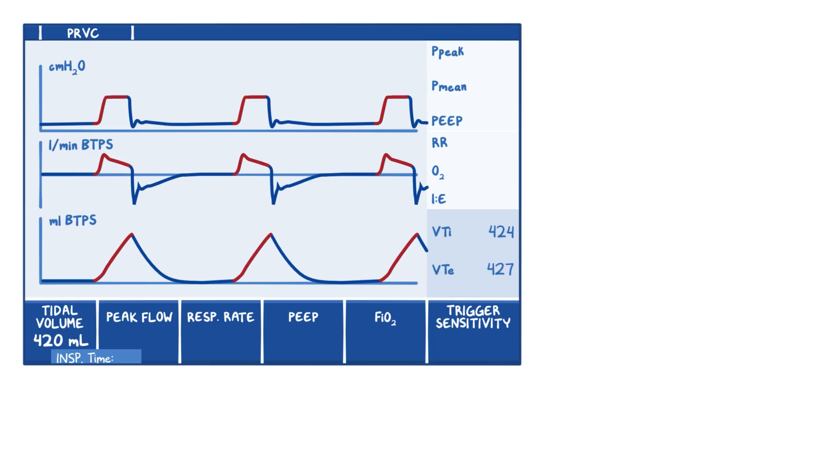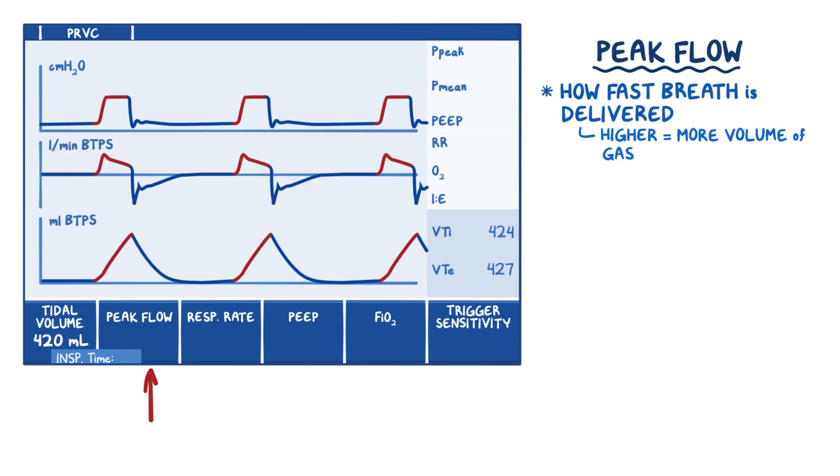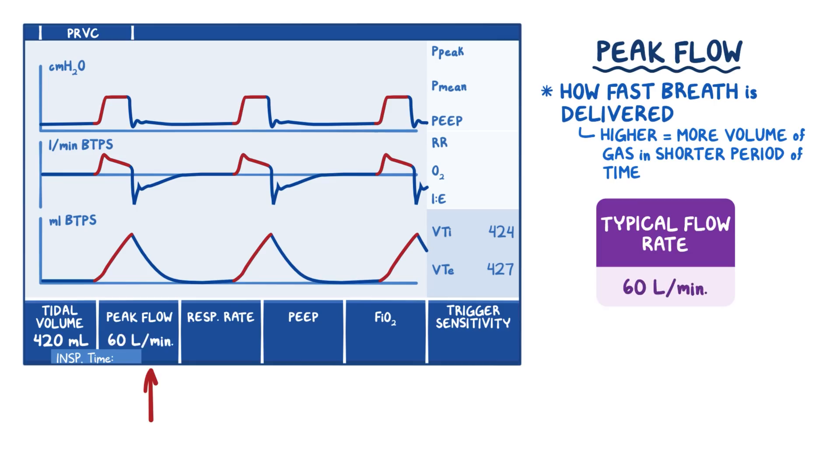Next, we need to set our peak flow, respiratory rate, and inspiration time, which all go hand in hand. The peak flow setting determines how fast we want each breath delivered to our patient. The higher the flow rate, the shorter the length of inspiration. Or in other words, with a higher flow, we have more volume of gas available to deliver a larger amount in a shorter period of time. Typical flow rates are usually set at 60 liters per minute, but can be increased to deliver breaths more quickly if required.